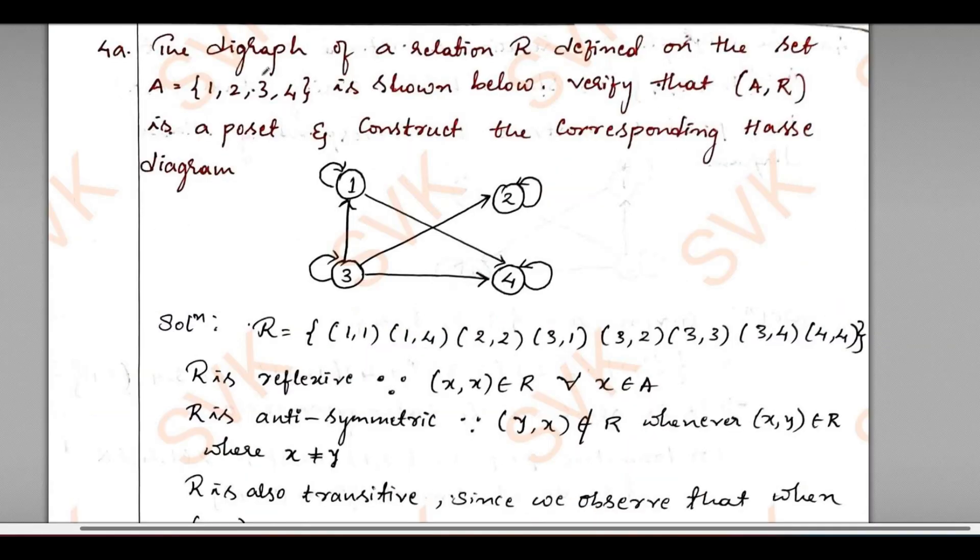Consider question number 4a. The digraph of a relation R defined on the set A equals {1, 2, 3, 4} is shown below. Verify this relation AR is a POSET and construct the corresponding Hasse diagram. So for the given digraph, we need to construct a Hasse diagram and also verify whether it is a POSET or not. First, we should know the definition of POSET: it should be reflexive, antisymmetric, and transitive. First by looking at the digraph, we will construct a relation R.